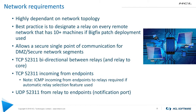Network requirements are dependent on your organization's network topology, but best practice is to designate a relay on every remote network that has 10 or more machines if BigFix patch deployment is used. You can put relays at single points of communication for DMZs and secure network segments. Make sure TCP 52311 is bi-directional between relays and the relay above them, and from clients to relays. Also, if you use automatic relay selection, ICMP is required incoming from endpoints to your relays. And don't forget UDP 52311 from your relay to your endpoints — that's the notification port for new content.